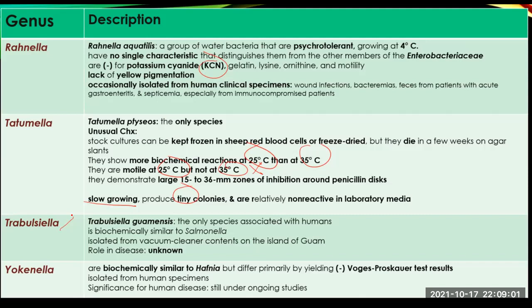Trabulsiella guamensis is the only species associated with humans. It is biochemically related to Salmonella and has been isolated from vacuum cleaner contents on the island of Guam; its role in disease is unknown. Yokenella is biochemically similar to Hafnia but differs primarily by yielding negative Voges-Proskauer test results. They have been isolated from human specimens and their significance for human disease is still under ongoing studies. This is the end of this presentation.